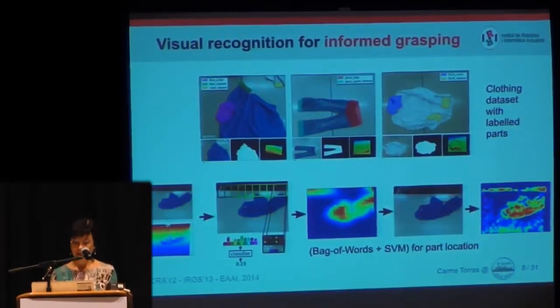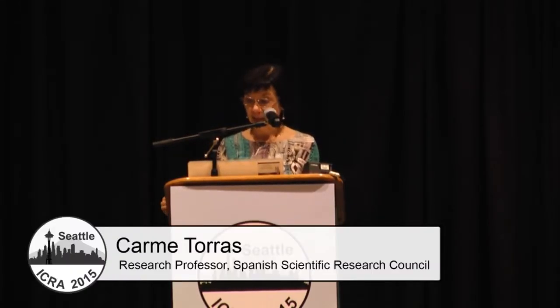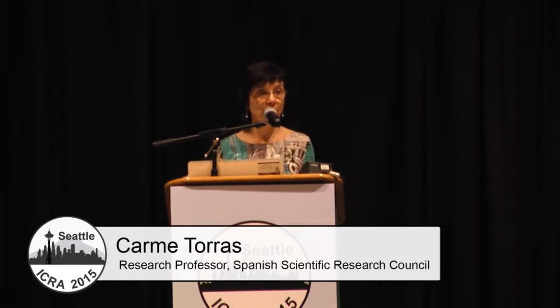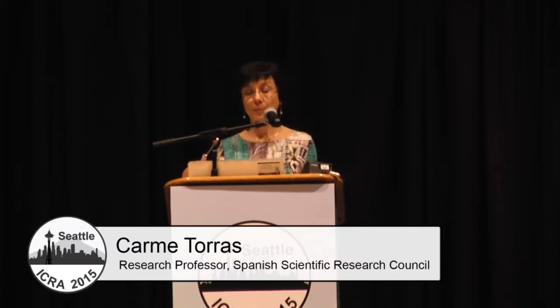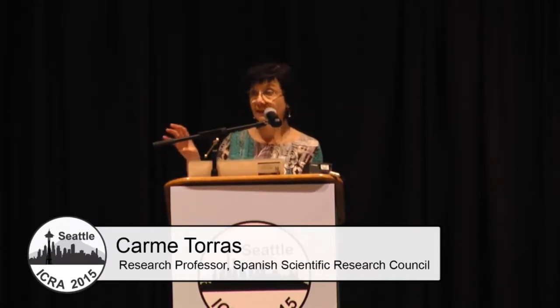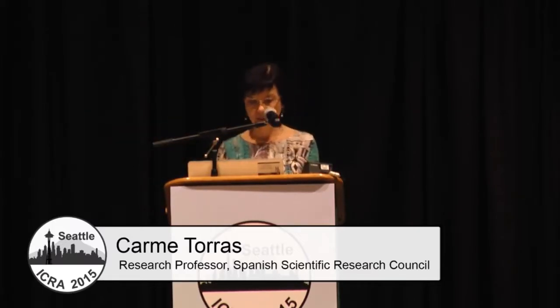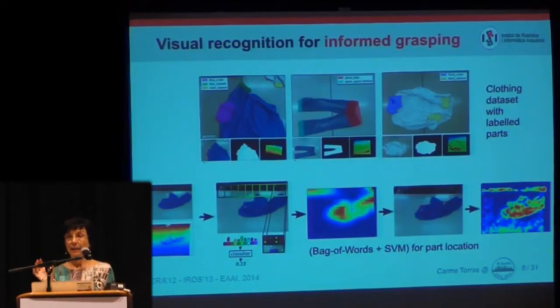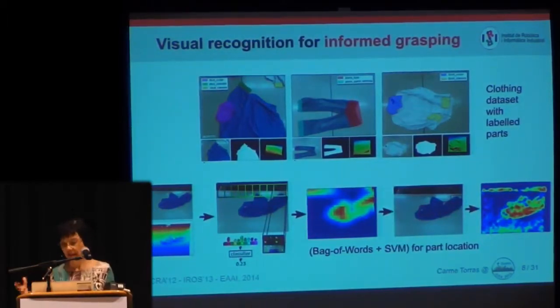We have devised a vision pipeline starting from RGBD and depth images. In a training phase, we compute descriptors by sliding a window along the image. Then we build a dictionary of code words using a bag-of-words approach. And with a support vector machine, we classify the different parts as a training set. In execution, we compute the descriptors again to build a probability map of having a collar, and then place a box around the most probable location and find the best grasping point using another technique.